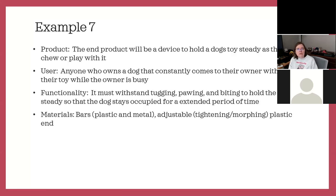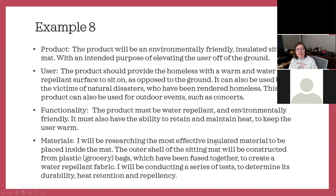Engineering example seven: a device to hold a dog's toy steady as they chew or play with it — for anyone who owns a dog that constantly brings their toy to their owner while they're busy. The functionality means it must withstand tugging, pawing, and biting to hold the toy so the dog stays occupied for an extended period of time. Someone looked around, found a need, and created a project for it.